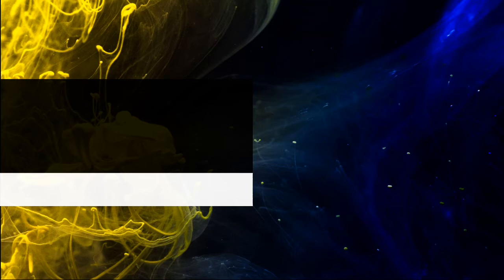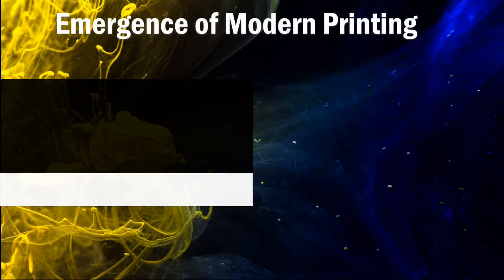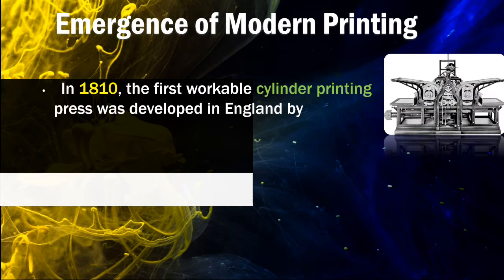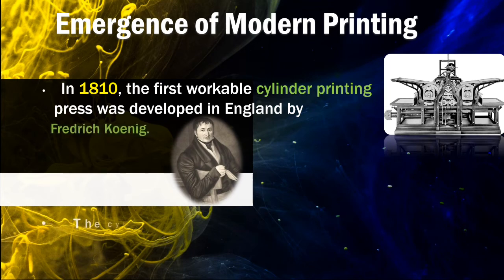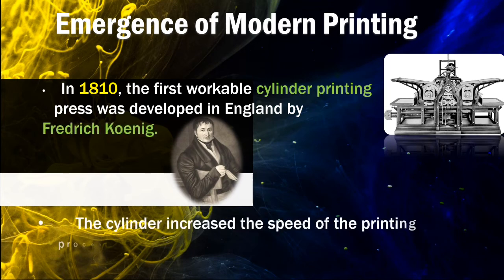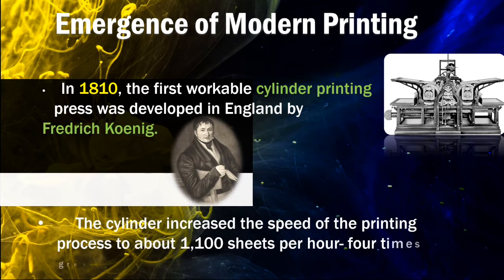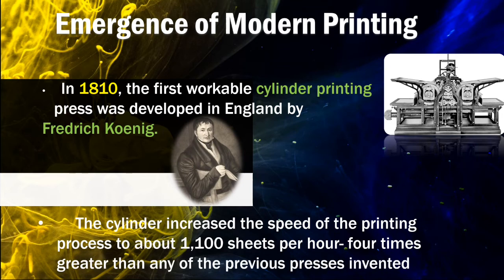For years, people continued to develop machines that could produce more and more copies of printed information in a faster way. The emergence of modern printing. In 1810, the first workable cylinder printing press was developed in England by Friedrich Koenig. The cylinder increased the speed of the printing process to about 1,100 sheets per hour, four times greater than any of the previous presses invented.